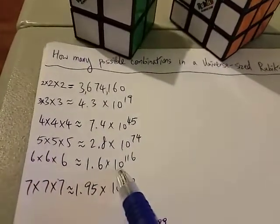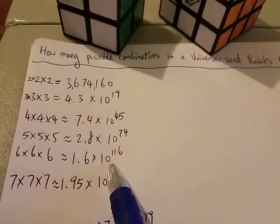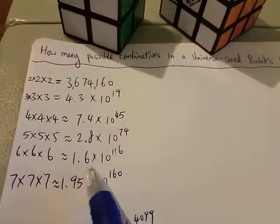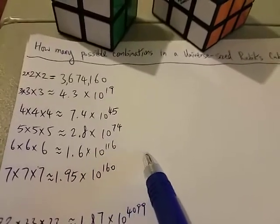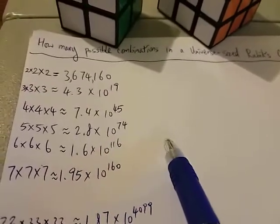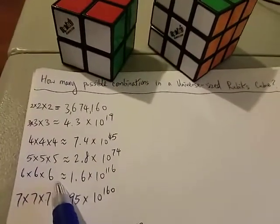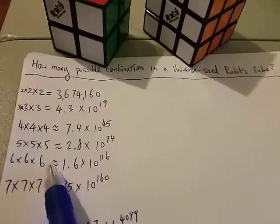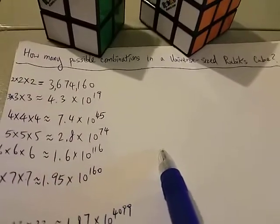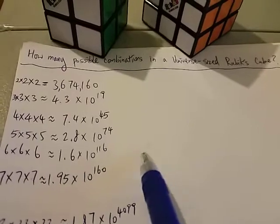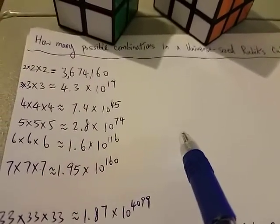For a 6x6x6, it's already bigger than a googol. Here, 1.6 times 10 to the 116 is bigger than 10 to the power of 100. So already, a 6x6x6, the total number of combinations is already bigger than a googol, which in turn is bigger than the number of atoms in the entire observable universe.